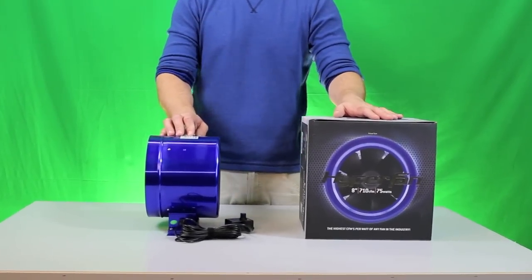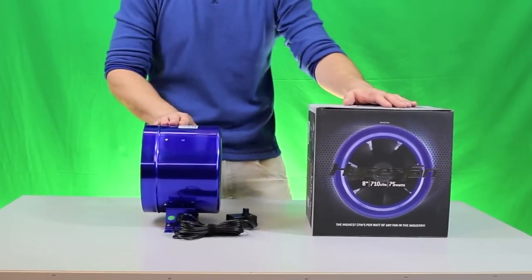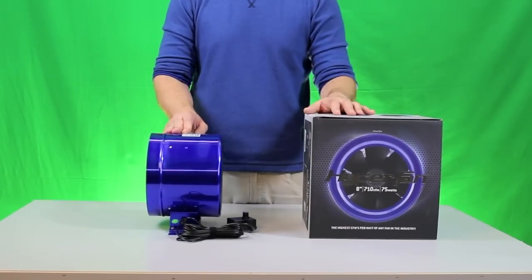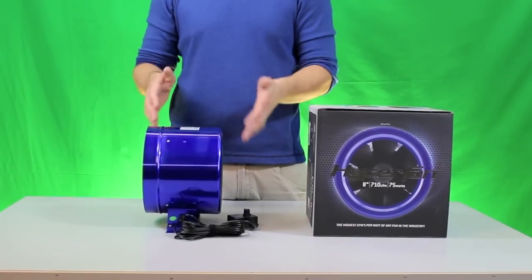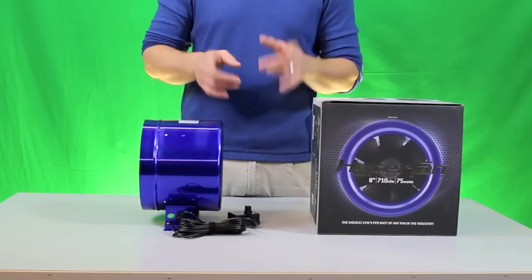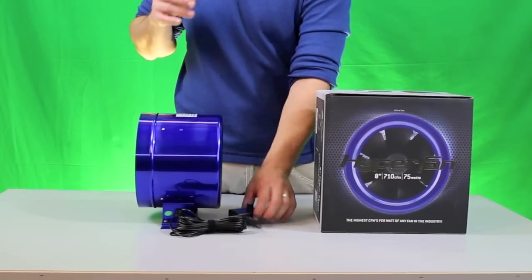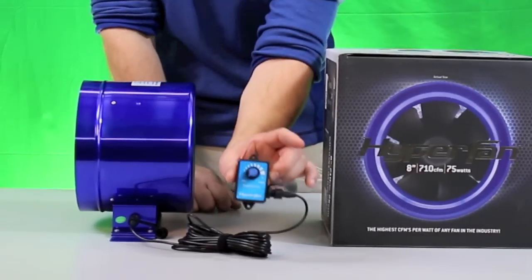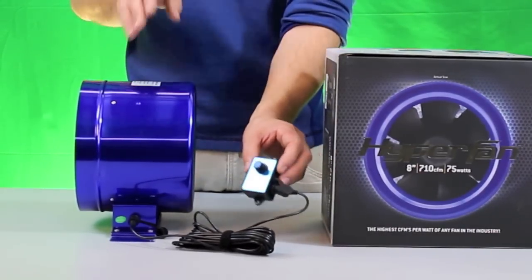So here we have the newest fan from Fresh Filter, it's the Hyper Fan from Sunlight Supply. It's got a five-year warranty. It is the smallest 8-inch fan that we've come across, but it's really cool. It's an EC motor and it runs off of this speed controller that's built in.